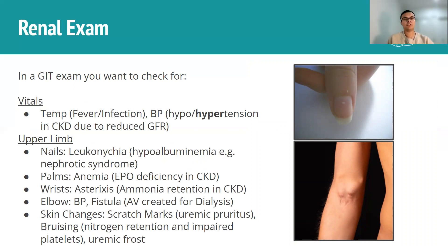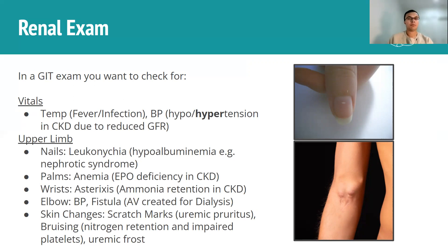With the renal exam, we move on from general inspection and have a look at the vitals. Temperature is important in any setting — whenever you have a high temperature or a fever, you want to think about infection. You can also look at blood pressure: you typically have hypertension in CKD because as the disease progresses, there's a reduction in GFR (glomerular filtration rate), so you can't get rid of blood volume as efficiently, leading to a buildup of fluid in the blood and therefore hypertension.